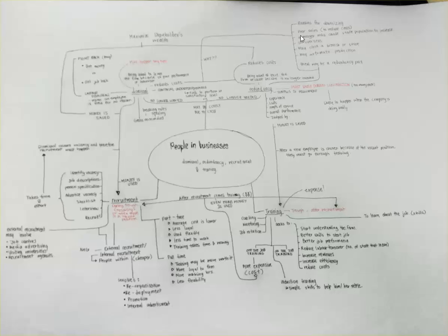The firm may close a branch or they may choose to automate production, which is also a way to reduce costs.